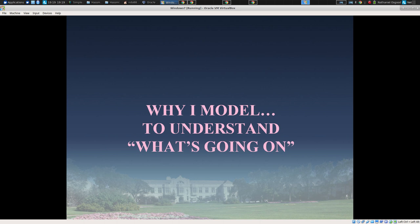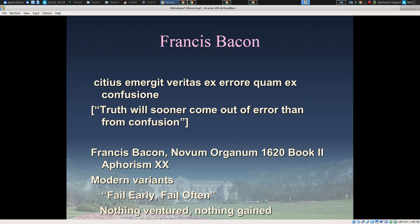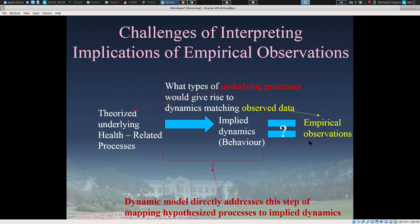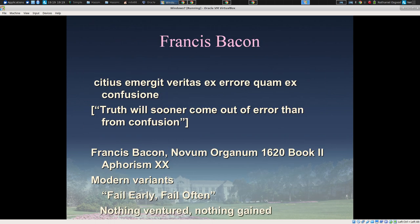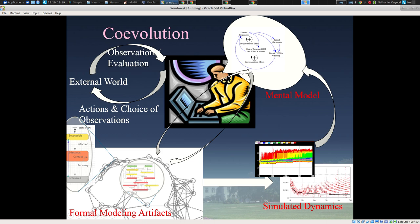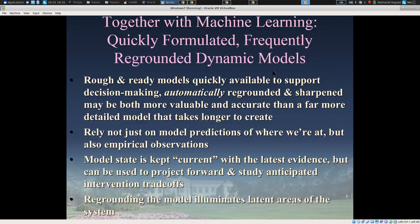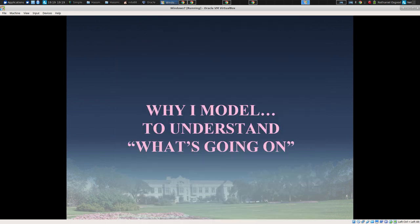A failure to match empirical evidence is not a failure of the model so much as a success of the modeling, in that it illuminated a latent inconsistency in our thinking, and allowed us, by identifying that inconsistency, to arrive at a better understanding.